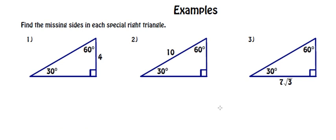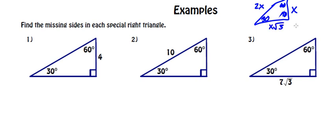I highly recommend that when doing one of these, you write the base relationship where you can see it: across from the 30° is x, across from the 90° is 2x, across from the 60° is x√3. In this first example, they give us the value across from the 30° angle, so x = 4. The hypotenuse is 2x = 8, and the longer leg across from the 60° is x√3 = 4√3. In the next one, they give us the hypotenuse: 10 = 2x, so x = 5. Across from the 30° is 5, and across from the 60° is 5√3.